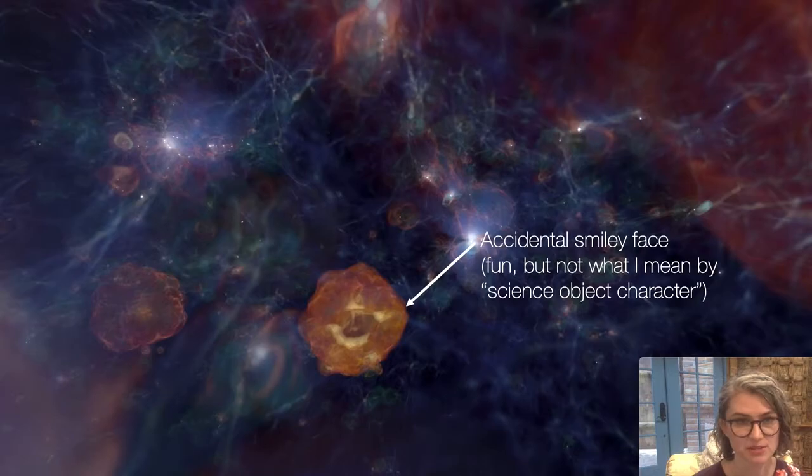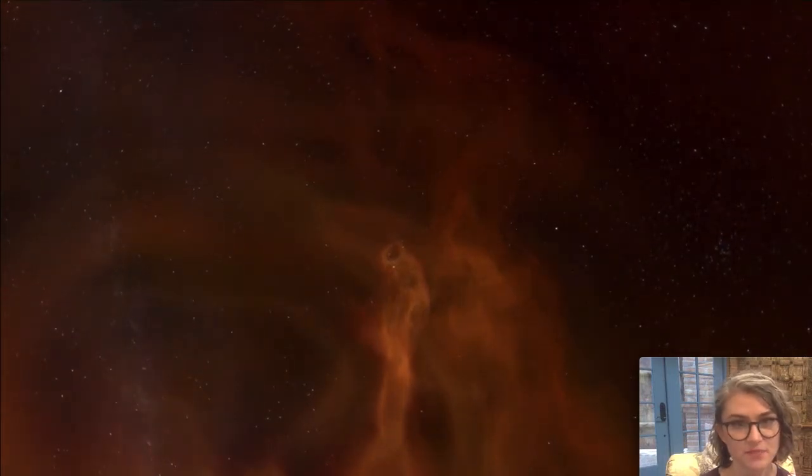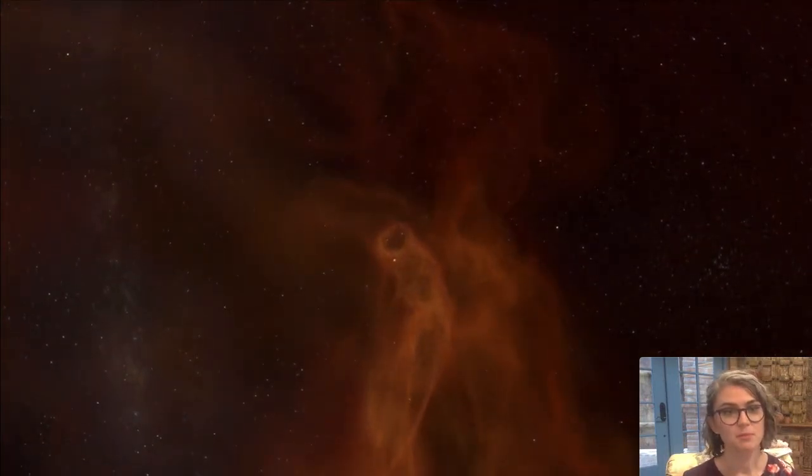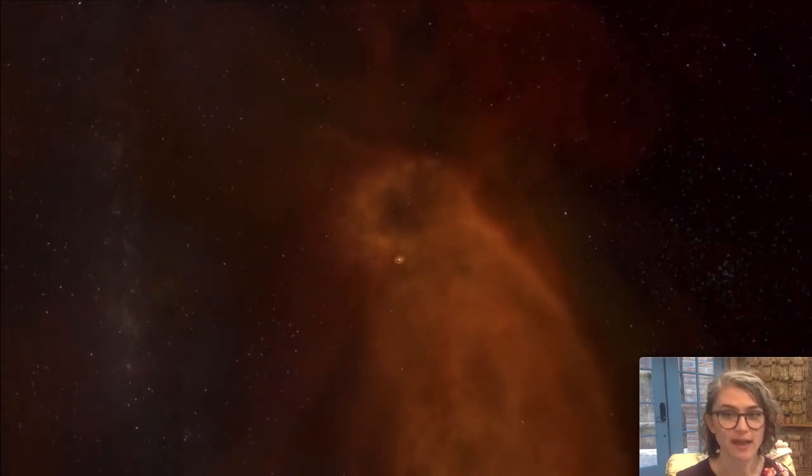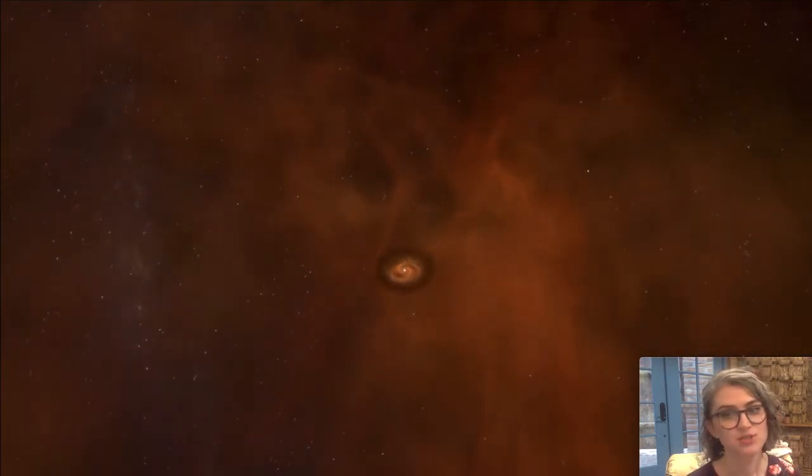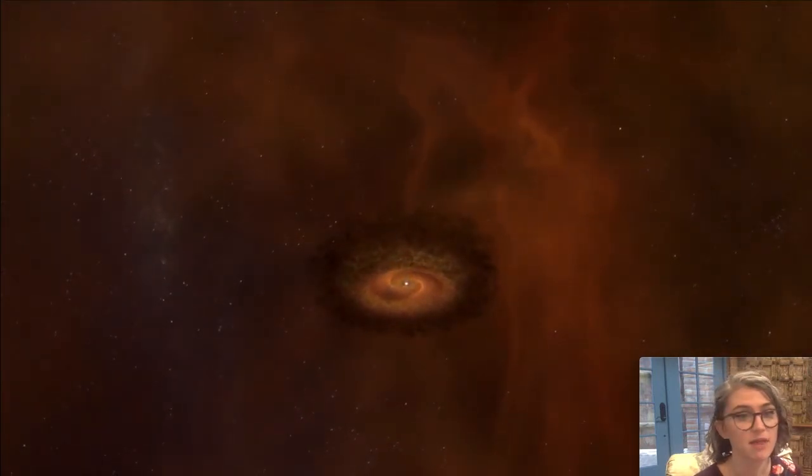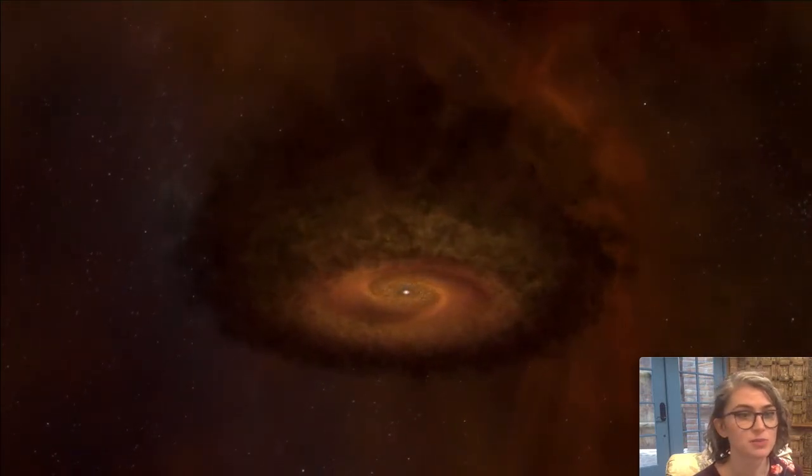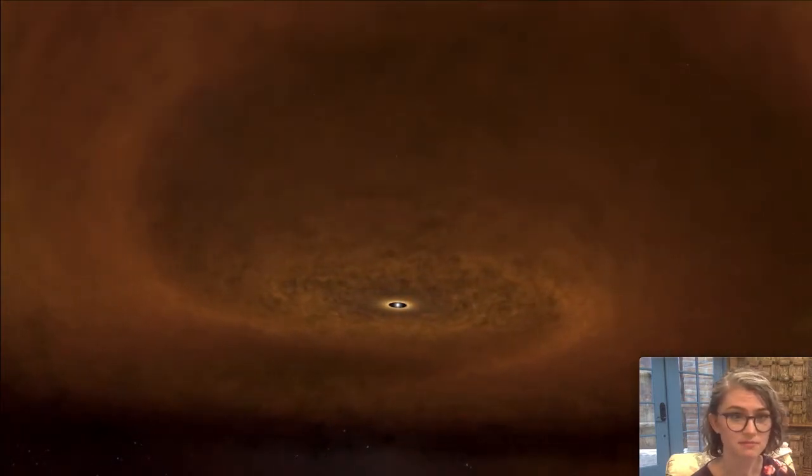This particular visualization had an accidental smiley face. It's not what I mean by a science character, but is cute nevertheless. Here's an actual example. This visualization is about the formation of our solar system, but it starts out with a wider picture, showing the contextual molecular cloud before introducing our main character, the protoplanetary disk. It's introduced as a seemingly small and insignificant piece of the universe that, in the next few minutes of the documentary, goes on to produce amazing things. It creates our planets, it creates the earth, and eventually life.